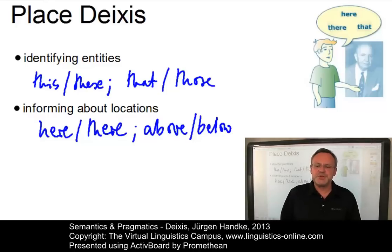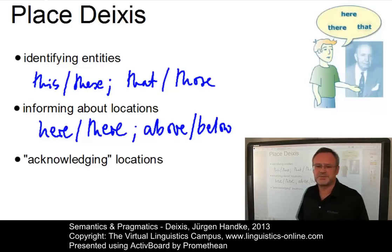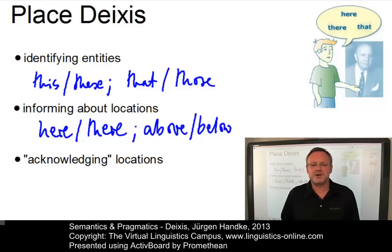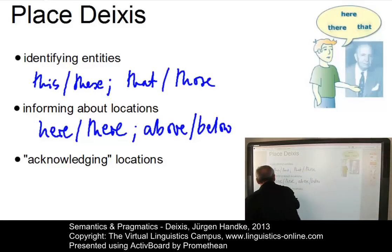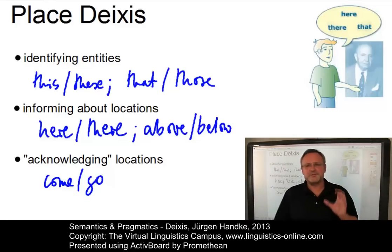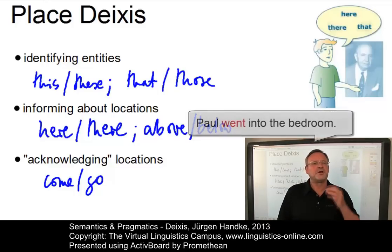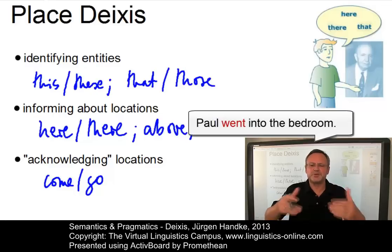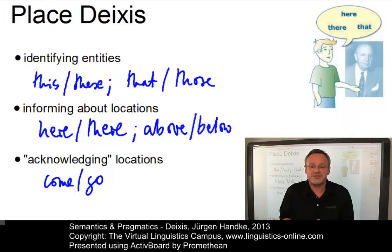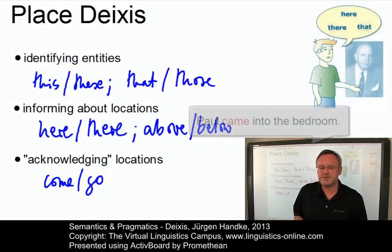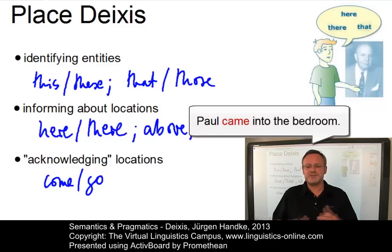In some special cases, speakers do not identify or inform by means of locative deictic expressions, but use them to acknowledge certain locations of an entity. In English, the deictic verbs of motion, 'come' and 'go', are often used in this respect. Compare the following two sentences: in 'Paul went into the bedroom', we acknowledge that the speaker was not in the bedroom. Whereas in 'Paul came into the bedroom', this acknowledges the speaker was in the bedroom himself.